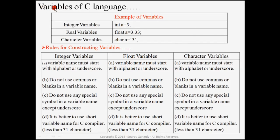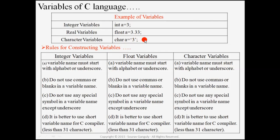Now come to variables of C language. A variable holds a constant value to execute a program. For example, 'a' is a variable of type integer, so it can hold an integer constant value with no decimal point. 'a' of type float can hold a value with a decimal point, such as 3.33. 'a' of type character can hold a letter in single inverted commas — it may be '3', 'a', 'b', or any symbol.